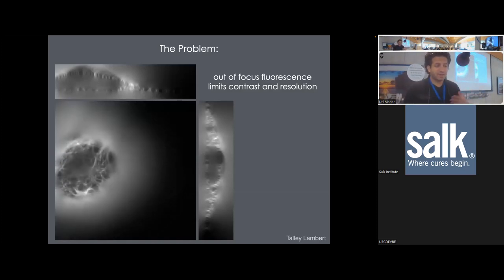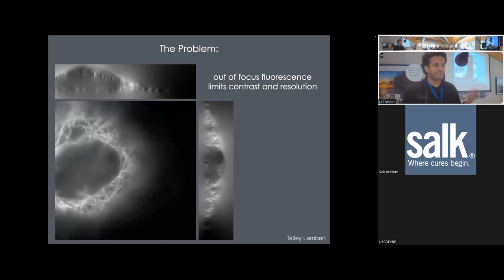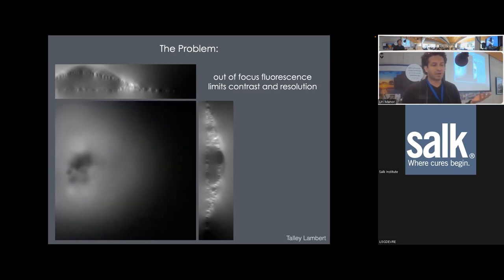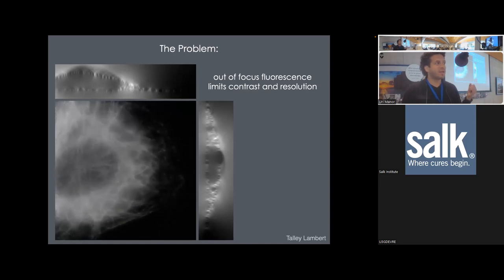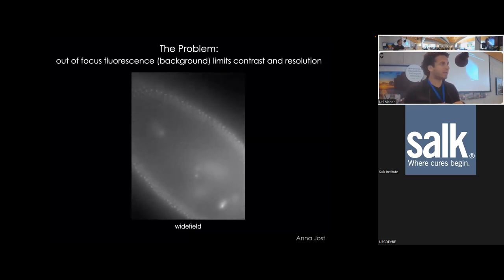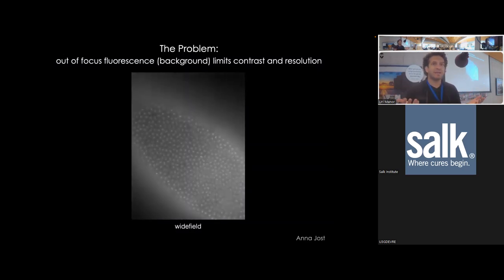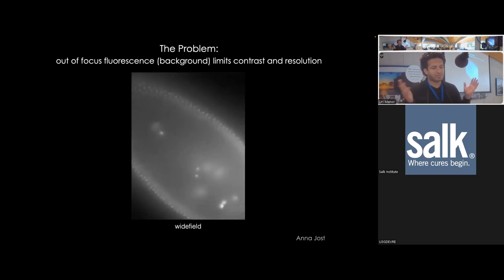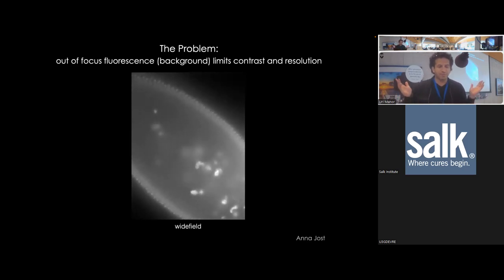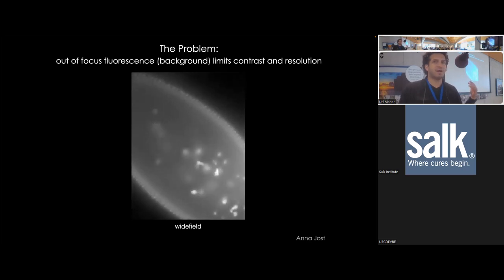Jennifer already explained we have a big problem when doing imaging, which is background — unwanted signal. In a normal wide-field microscope, this includes out-of-focus fluorescence, which ultimately limits contrast and resolution. Background comes from all sorts of places: labeled structures you don't care about, out-of-focus light, light scattering — it comes from everywhere. It becomes a particularly cumbersome problem when you're imaging really thick samples; the thicker the sample, the more out-of-focus light becomes a problem.